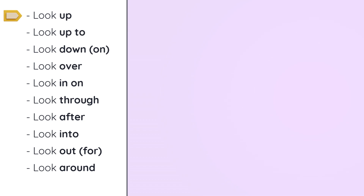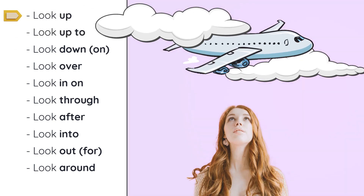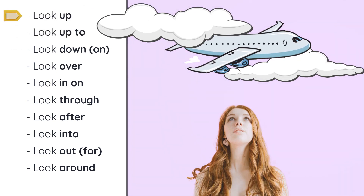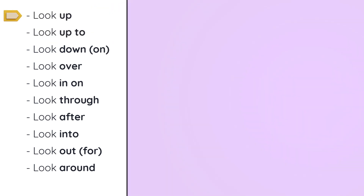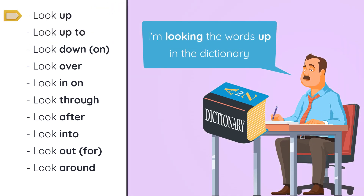Let's start with 'look up'. There is a literal meaning — look up at the sky, see that plane flying. If any of these words give you difficulty and you're not sure what I'm saying, look them up in a dictionary or look them up online. Go to Google or wherever you go, the dictionary, punch in the word, and you will get the meaning.